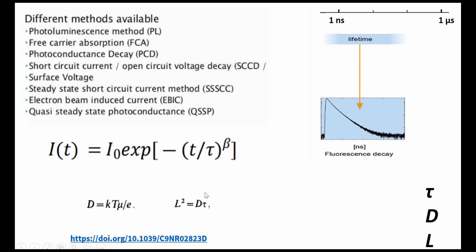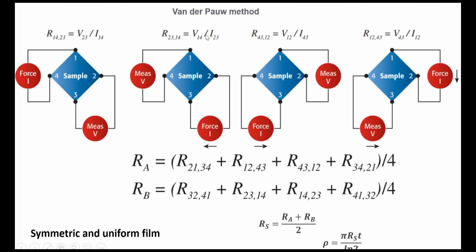To find mobility, we use the Van der Pauw method. The sample should be uniform and of known thickness. Four contacts (1, 2, 3, 4) are placed on the sample: contacts 2 and 3 are for voltage measurement, and contacts 1 and 4 are for current. R₁₂₄₃ means current is applied at contacts 1–2 and voltage is measured at contacts 4–3.